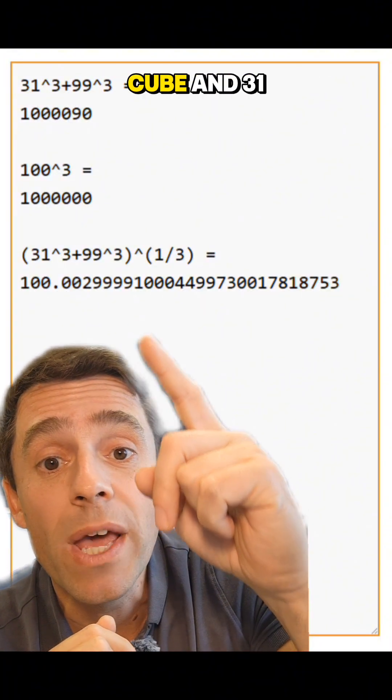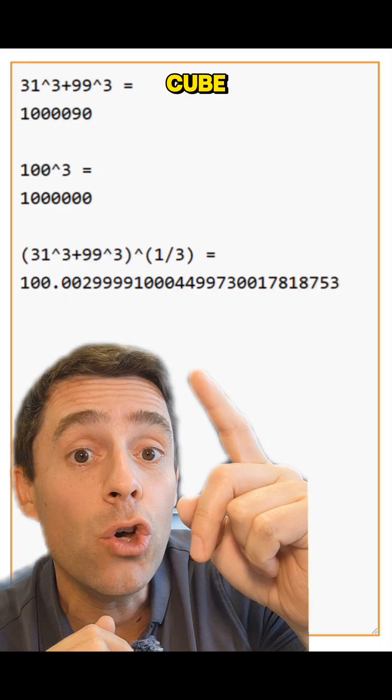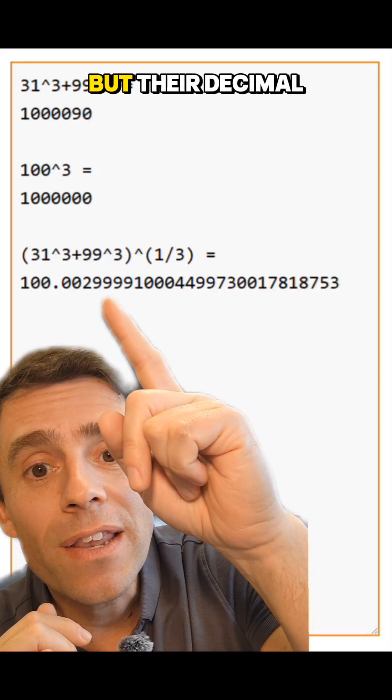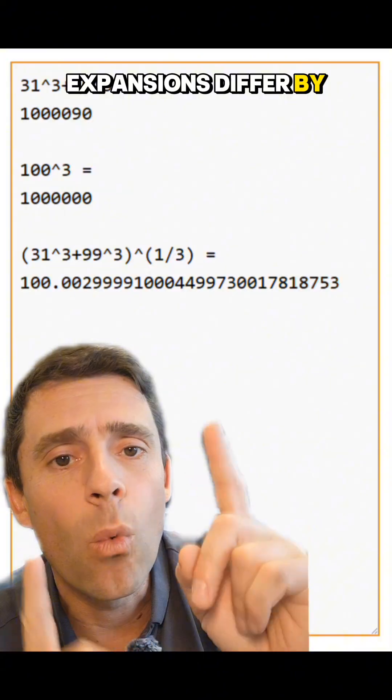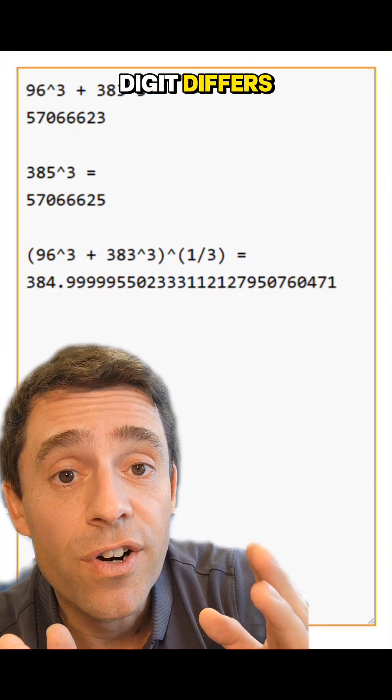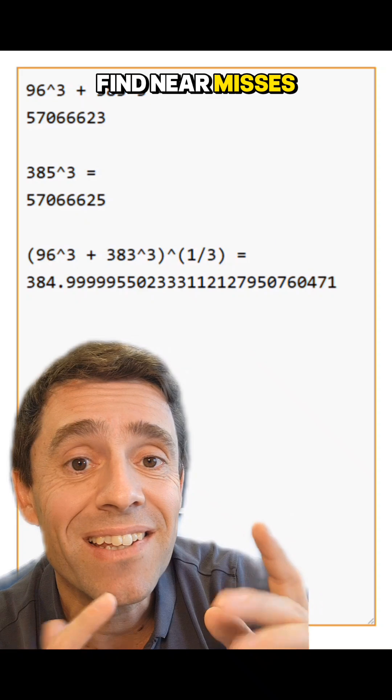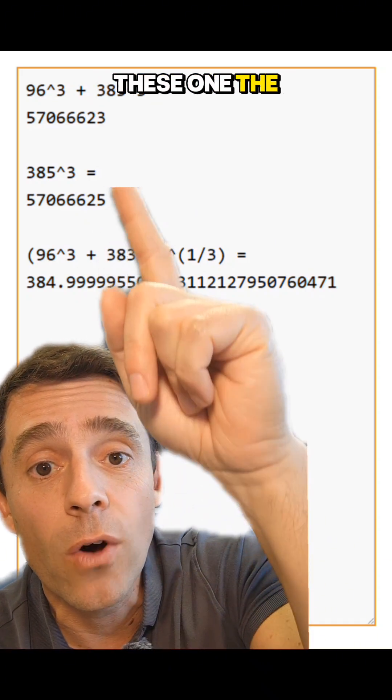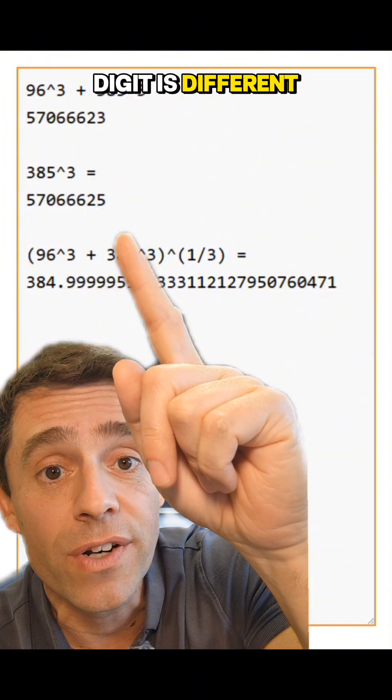For example, 100 cube and 31 cube plus 99 cube, they are not equal, like Fermat's theorem says, but their decimal expansions differ by one digit, by 1,9. And you can even pick what digit differs and try to find near misses where that one digit is the one that misses. For example, this one, the only the unit's digit is different.